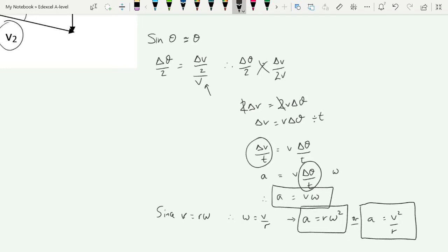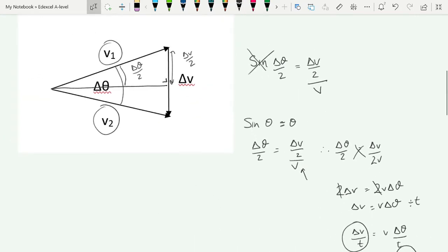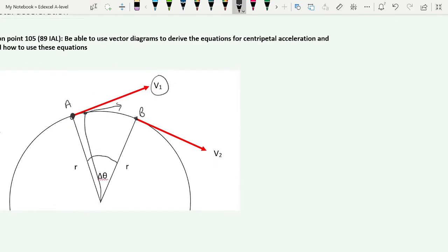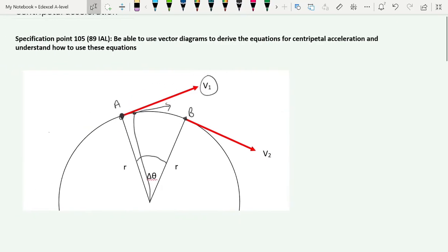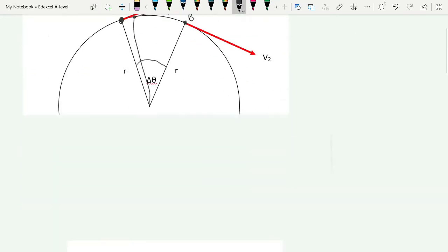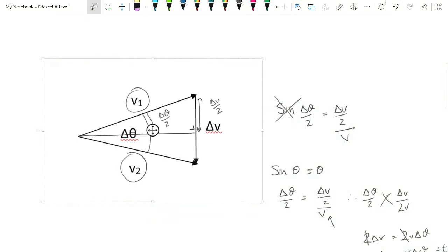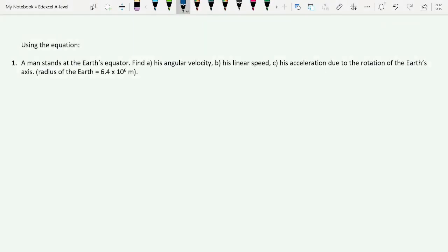Make sure that you can do this derivation step by step starting from the vector diagram. If we go back up to our vector diagram, this is the key here, because normally in an exam you'll be given the circle with the object moving around in the circle, and your job is going to be to establish the vector diagram, and then from there to walk through the derivation. Our specification also mentions using these equations, so let's have a go.